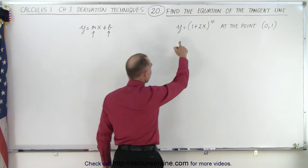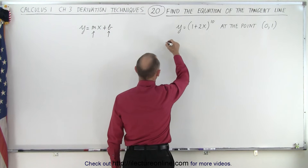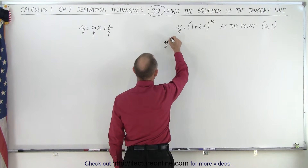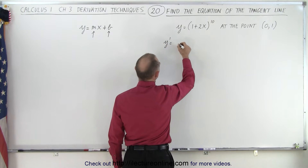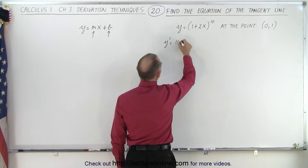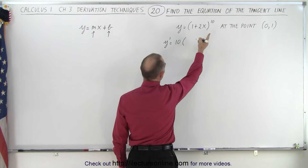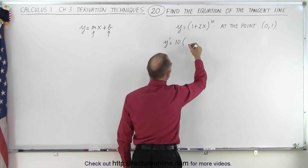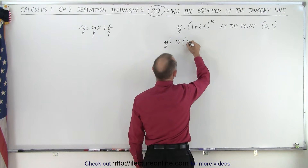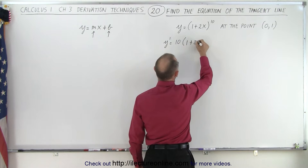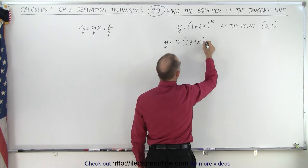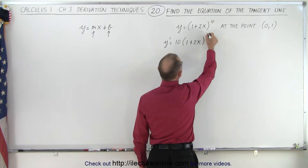So we're going to take the derivative of y. We get y prime is equal to 10 times — here we use the power rule — 1 plus 2x to the exponent minus 1, which gives us the exponent 9,